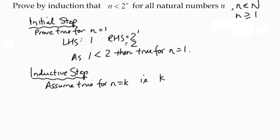i.e., k is less than 2 to the power k. Okay, so that's our statement that we are blanking.